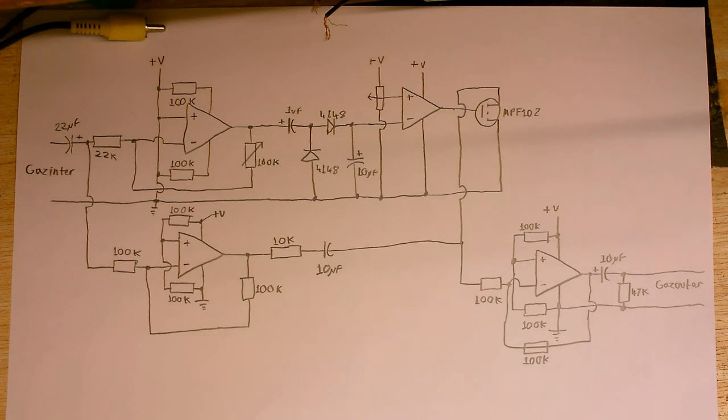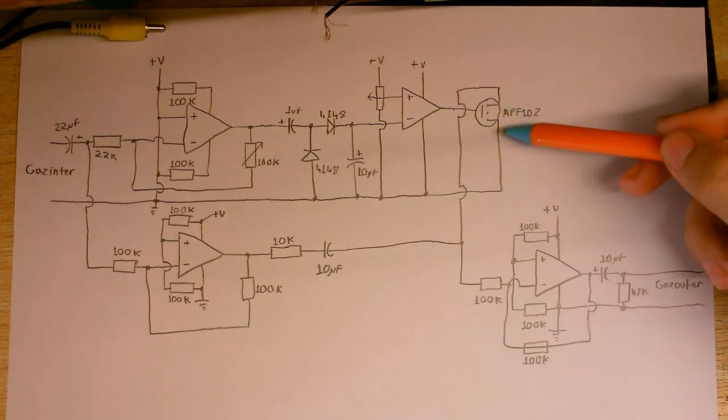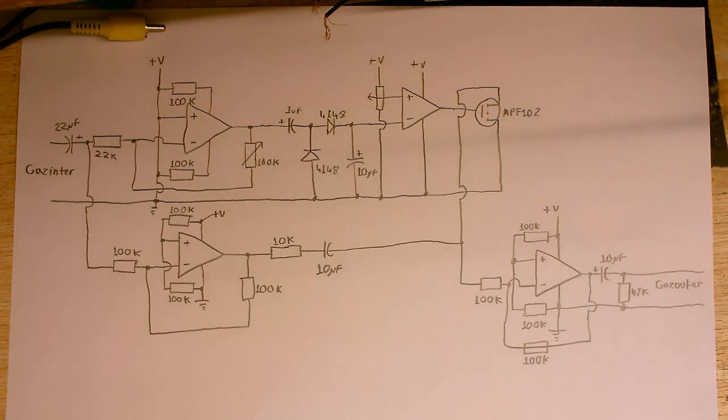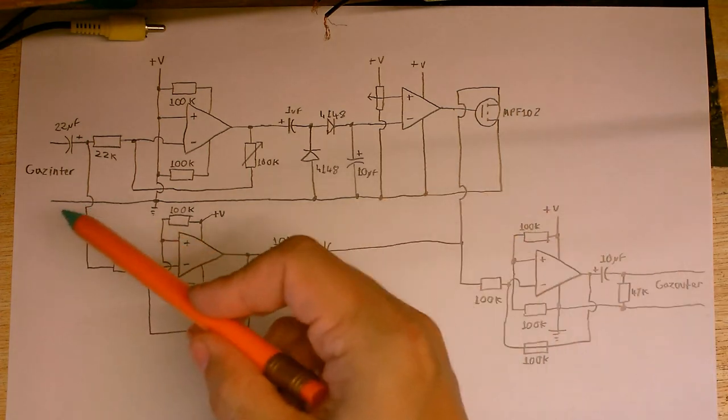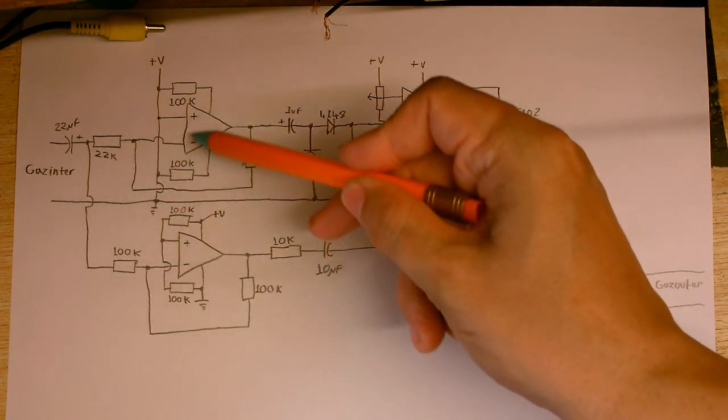But I'll take you through a little talk through of it. So just like before, we've got a MOSFET that's actually acting as the audio gate to simply shunt it to ground or let it through. So audio comes in here, gets amplified by this op amp here.